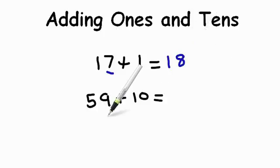If we're adding 10s, your 1s don't change the number you're adding the 10 to. So that will still be 9. And the 10s, we add to the 10s place here. So 50 plus 10 is 60, or 69.